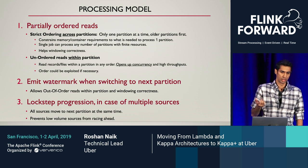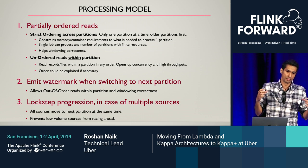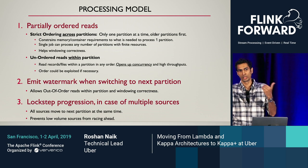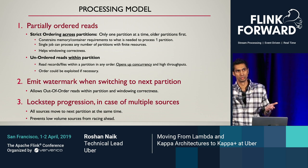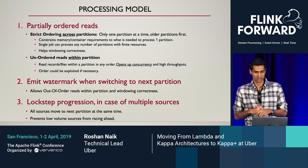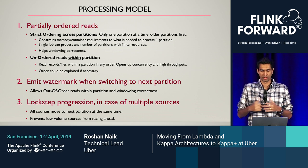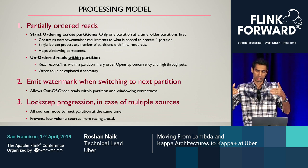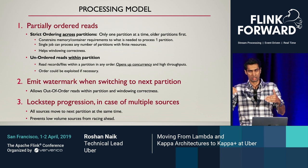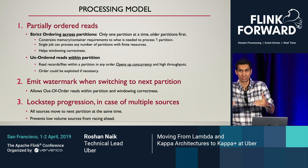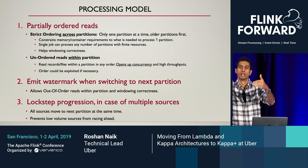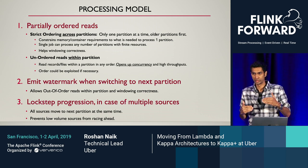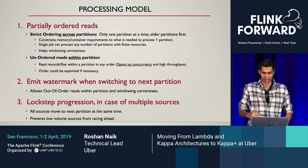Finally, lockstep progression — this happens when you need two or more sources. If you're doing a join or union between two Hive tables or two Kafka topics, both sources need to switch to the next partition in lockstep: one needs to wait for the other to finish before they both move to the next partition.